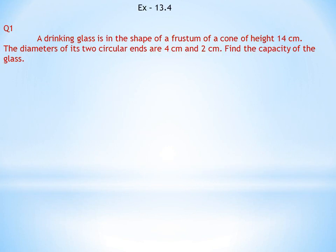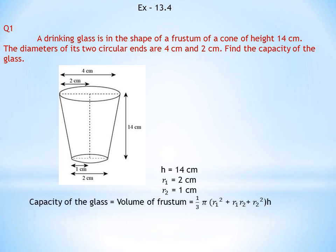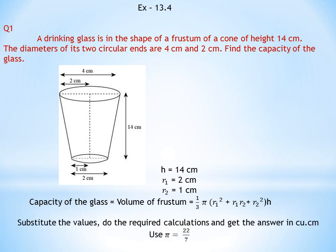Exercise 13.4, Question 1: A drinking glass is in the shape of a frustum of a cone of height 14 cm. The diameters of its two circular ends are 4 cm and 2 cm. Find the capacity of the glass — that means find the volume. All measurements are given: R1, R2, and height. Apply the formula (1/3)π(R1²+R2²+R1·R2)·H, substituting values with π = 22/7. The answer will be in cubic centimetres.